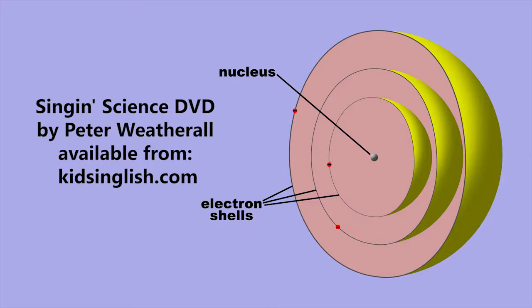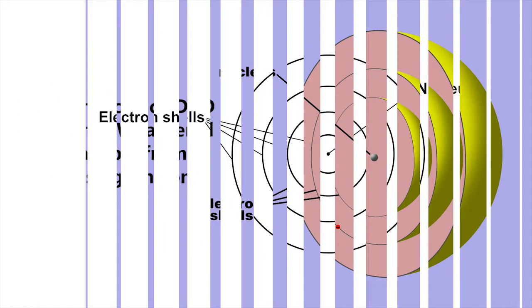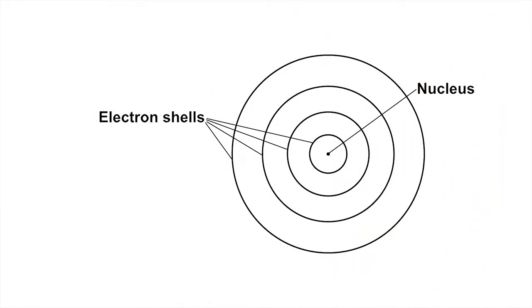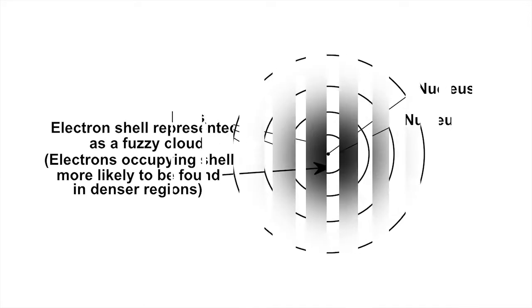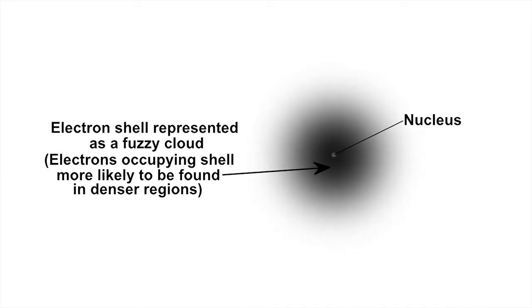The electrons of an atom occupy shells surrounding the nucleus of the atom. For convenience, in two dimensions, these can be represented as concentric circles, but actually they're more like fuzzy three-dimensional regions where electrons with particular energies can be found.